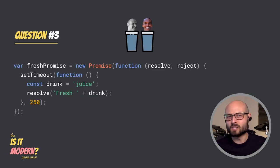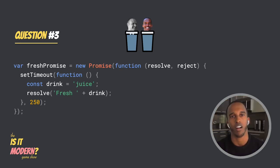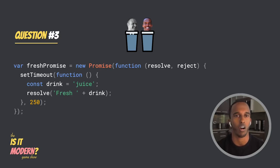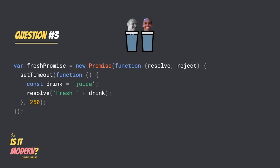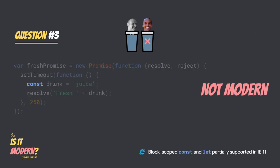Last question. This piece of code is a little larger, and I promise it's not a trick question. Modern or not modern? Taking a look here, I don't think there's anything modern regarding the promise syntax, but I do see a variable being declared with const. And const and let wasn't introduced until much later, so this has to be modern code. Ooh, tricky. Block-scoped let and const are actually supported in Internet Explorer 11. There are a few bugs to keep in mind, but we can run this code. I guess I learned something new today.